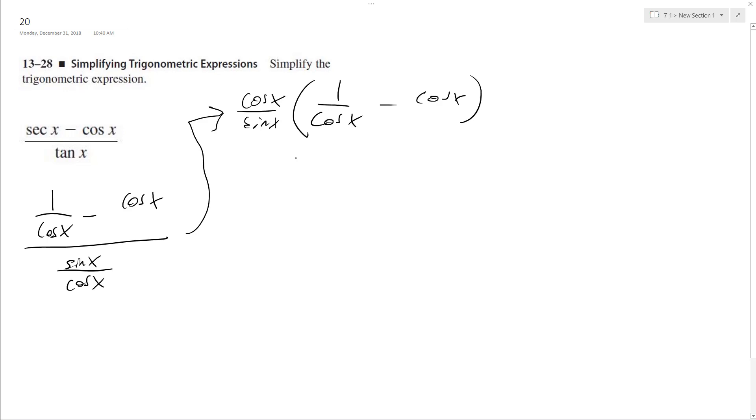So what happens here? When I multiply cross, I get cosine x over sine x cosine x minus cosine squared x over sine x.